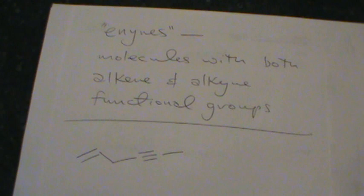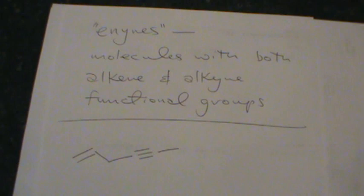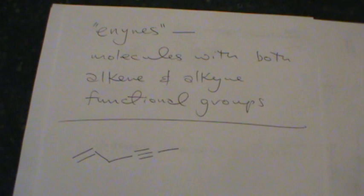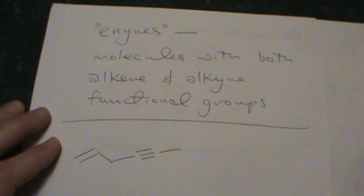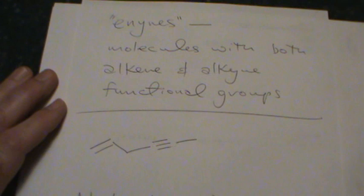Let's begin with enines. Enines are molecules that have both an alkene and an alkyne functional group in the same molecule, and they're actually fairly common. You don't necessarily have to treat these as molecules that are different from alkenes or alkynes. Depending upon where the two functional groups are located, they might behave a little differently, but we'll talk more about that later in the semester when we discuss conjugated pi systems. For right now, all we need to know is that these molecules exist.